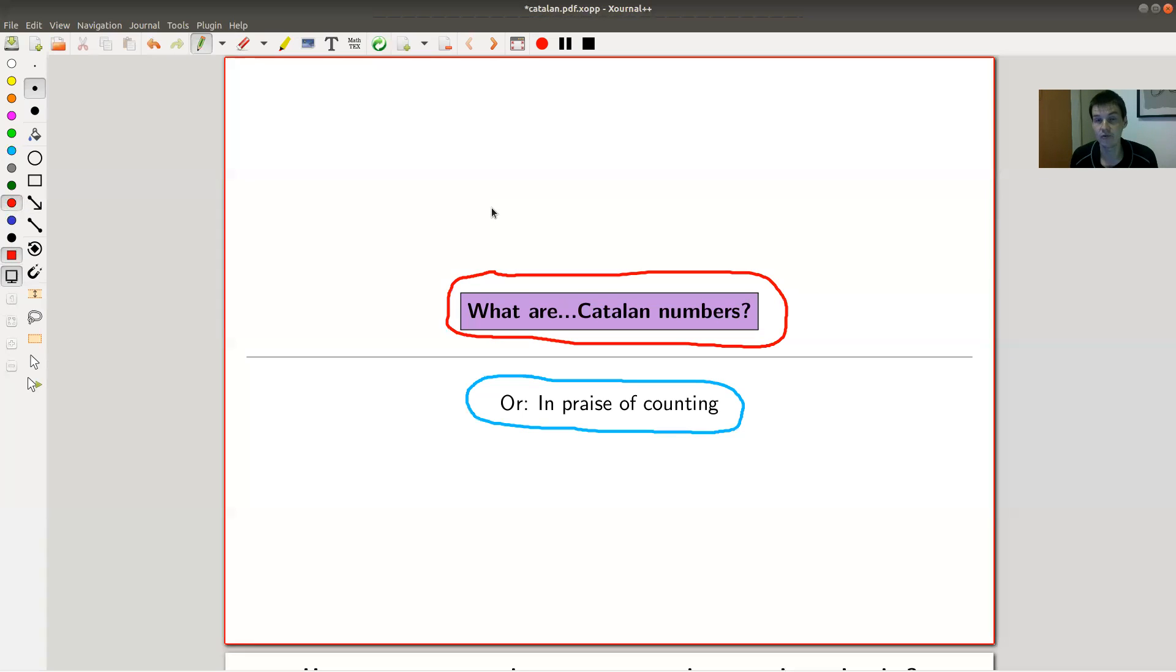And while they were known for quite a while, I go back to many people, Euler, Catalan, or Chinese mathematicians already knew them. So link to everything is, of course, down in the description as usual. And the point is they kind of opened the field of enumerative combinatorics.